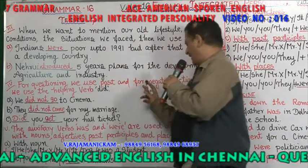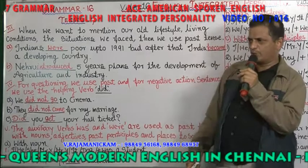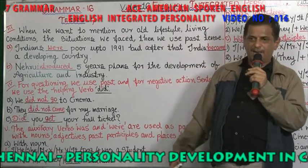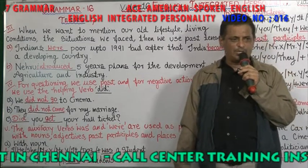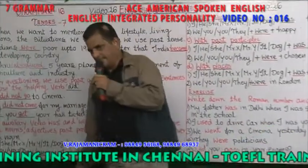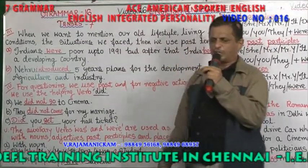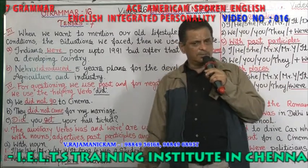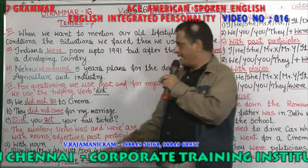For questions and negative sentences in the past, we use the helping verb 'did.' Did is very important. When you want to question an action in the past, you use 'did.' For example: 'Did you come yesterday?' For negatives: 'I did not come yesterday.' Note: you should not say 'I did not came.' We did not go to cinema. They did not come for my marriage. Did you get your hall ticket? Whenever you go into negative or question in the past, you use 'did.'